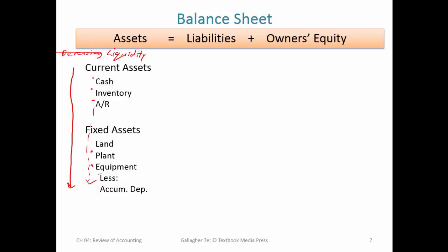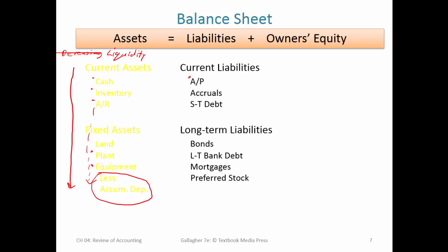We subtract accumulated depreciation because depreciation measures how much of these assets get used up in the course of producing goods and services, which reduces their value. With liabilities, similarly, we list them in order of currency — the things that are due soonest are listed first. Accounts payable are usually due within 30 days or so. Short-term debt might be due within less than a year. The cutoff is less than one year for current liabilities and greater than one year for long-term liabilities.